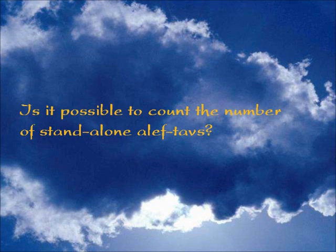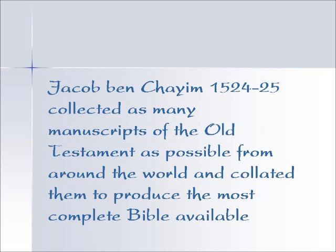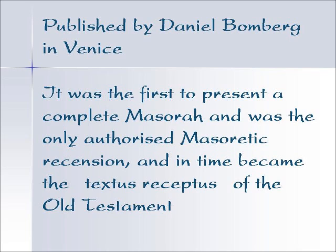We're going to talk about the process of recension — taking different copies of manuscripts and seeing how they compare to each other. We like to think of Tanakh as a monolithic, perfectly symmetrical document across time, but it is not. There are different scribal usages in many different texts. A man named Jacob Ben Chaim in the 1500s collected as many manuscripts of the Old Testament as he could find from around the world and collated them, producing the most complete Bible available at that time. It was published by Dana Bomberg in Venice and became the Textus Receptus of the Old Testament.